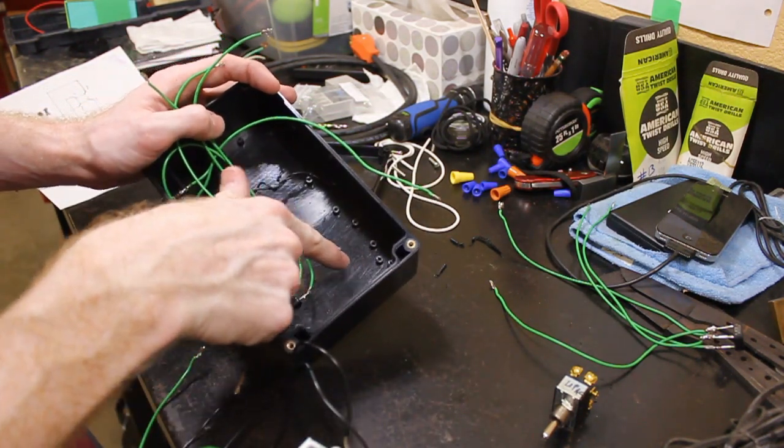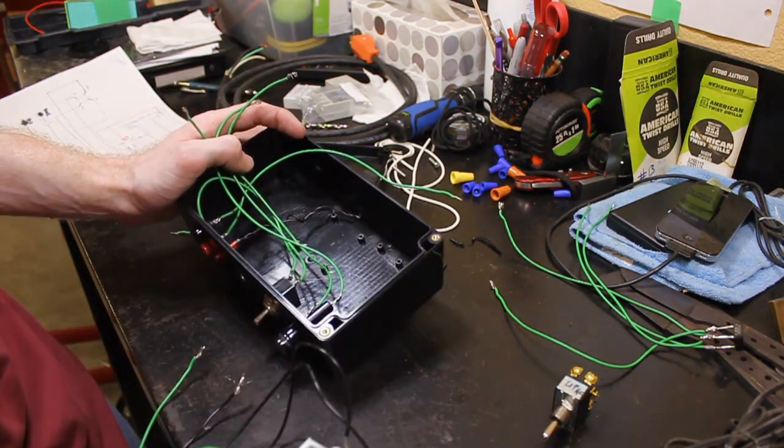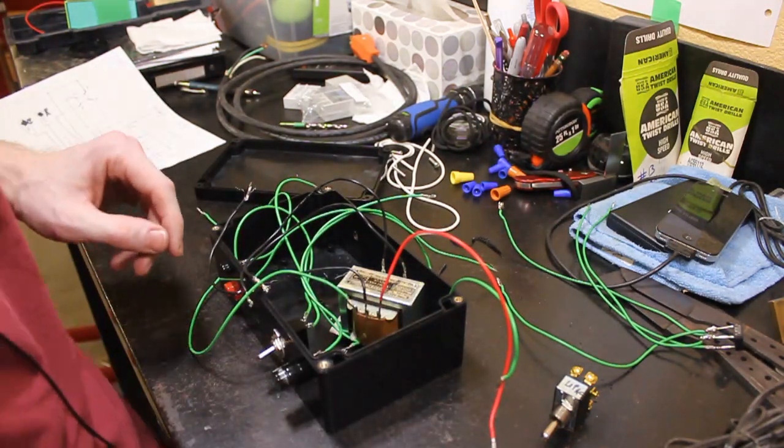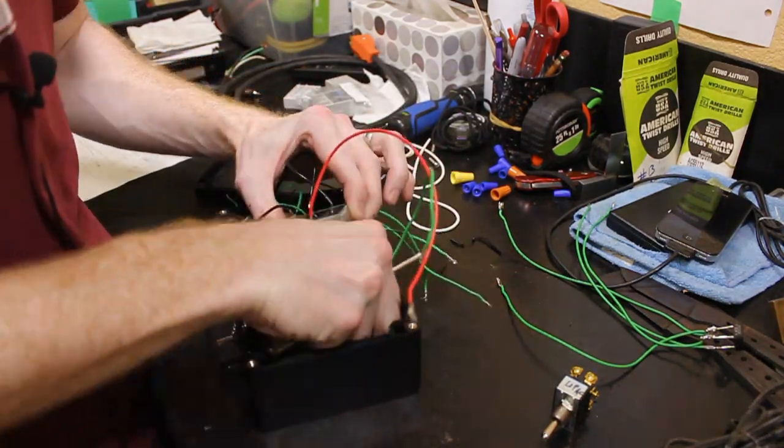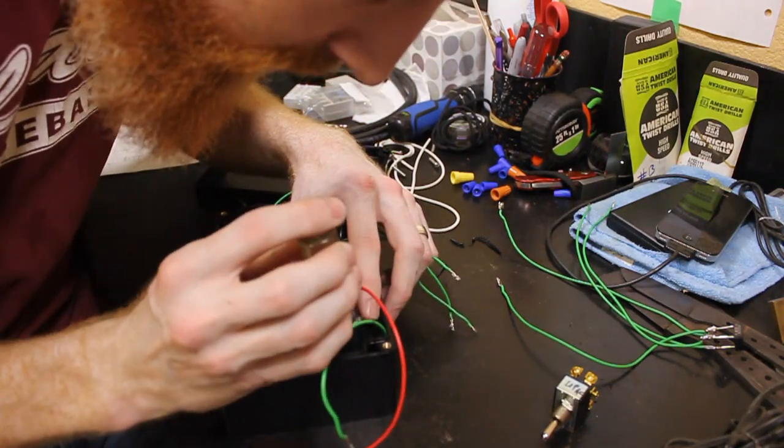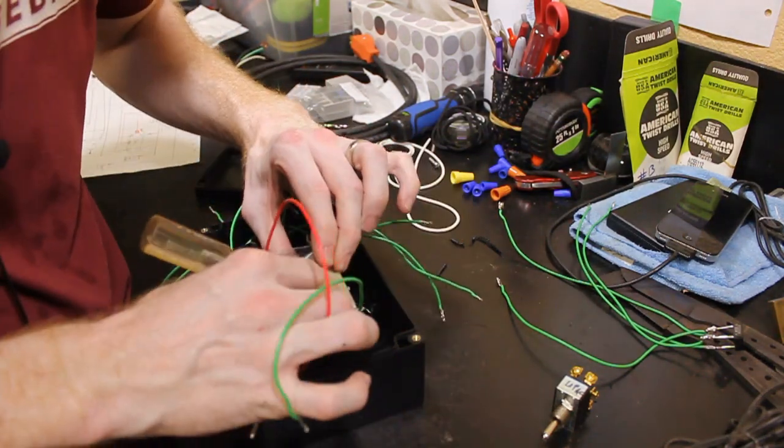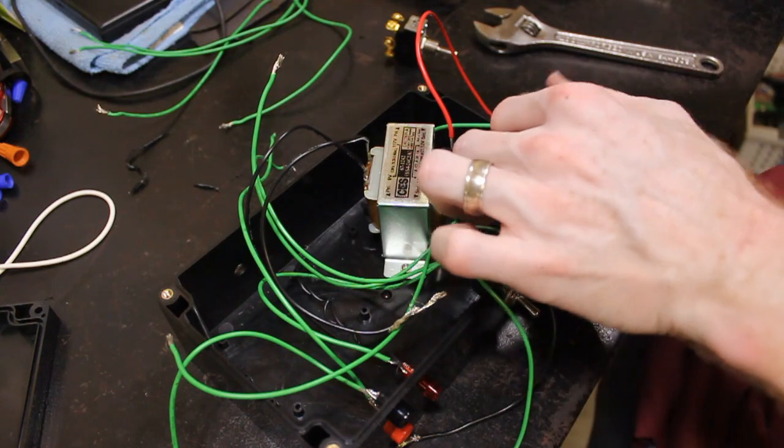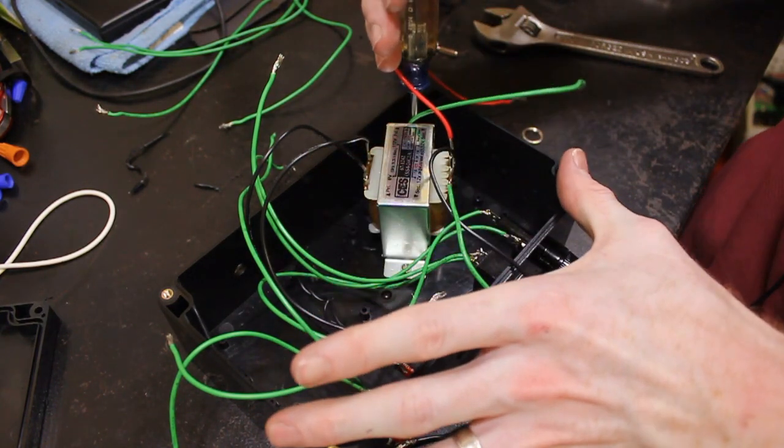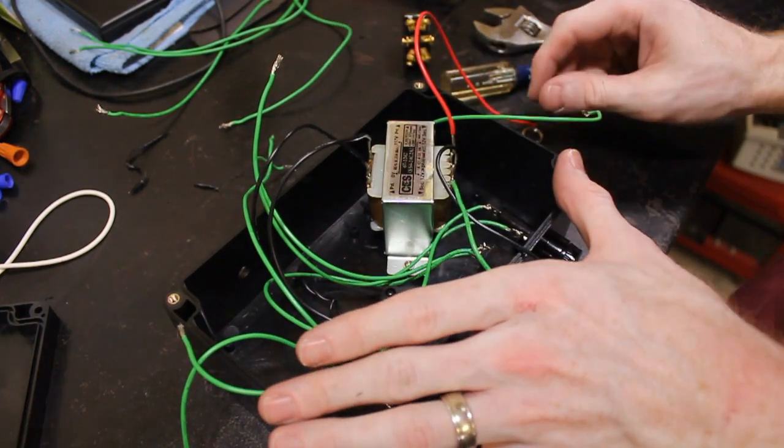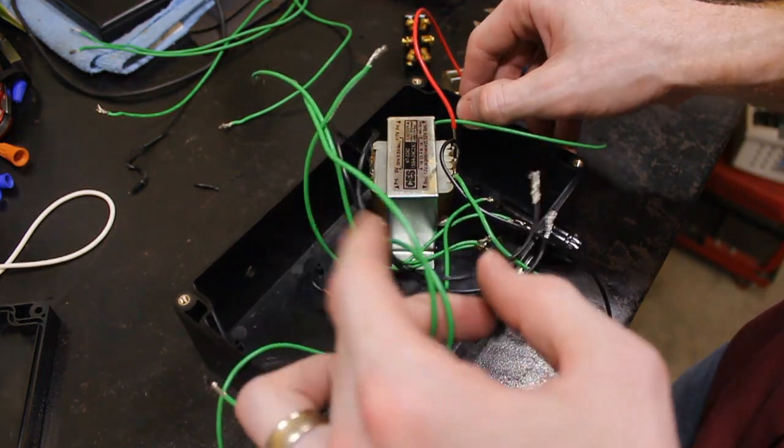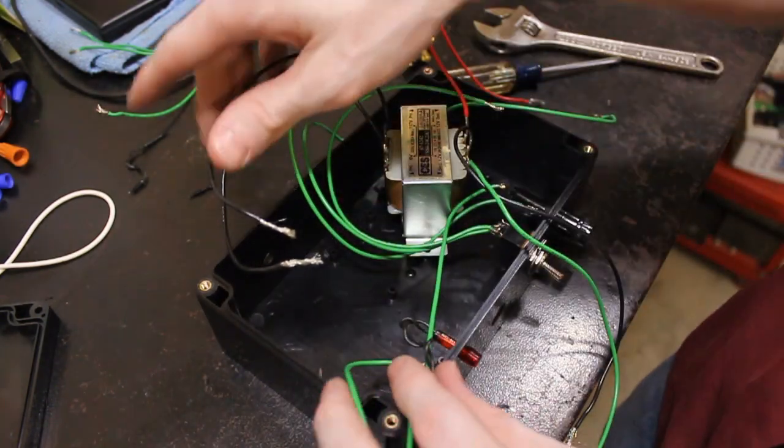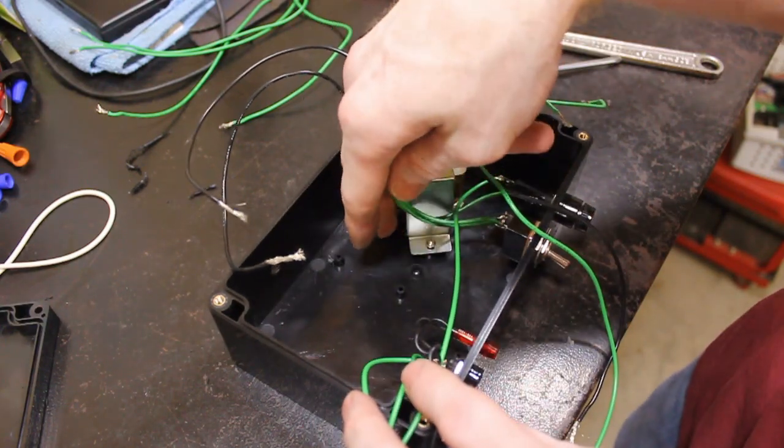This guy here our transformer just so happens to nicely line up with some of these holes in here. It actually lines up with this hole and I think this hole on a diagonal. So I had some of these small little screws from an old appliance so I'm going to use those to screw this transformer down into our box. You know that came out of my mouth way easier than it is to do. If your box doesn't have mounting holes that will fit your transformer go ahead and use some double-sided tape. It works pretty good.